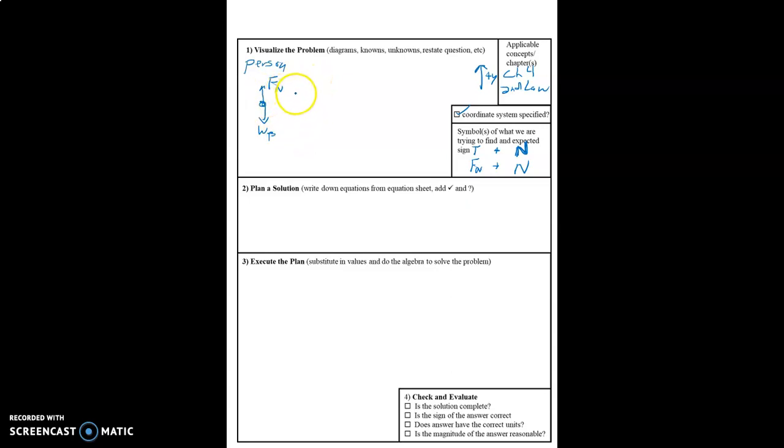Now, tension doesn't show up on there and tension is what we're trying to find. It's one of the things we're trying to find. We're also trying to find a normal force. And so we need to draw at least one more free body diagram.